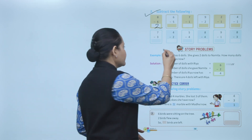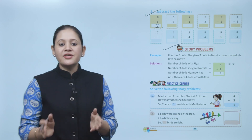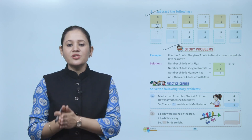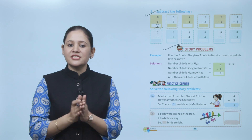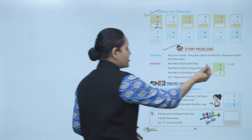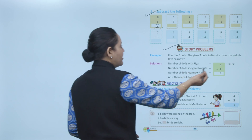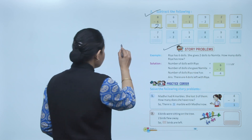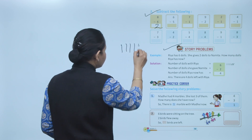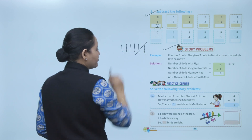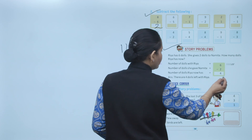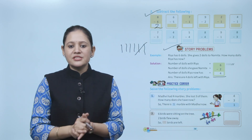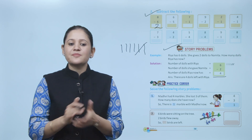Now we'll take an example. Ria has 6 dolls. She gives 2 dolls to Namita. How many dolls does Ria have now? Total Ria has 6 dolls, she gave away 2. So 6 minus 2 — total 6, gave 2 to Namita, how many are left? 4. So 6 minus 2 equals 4. There are 4 dolls left with Ria.